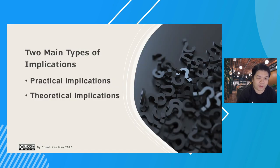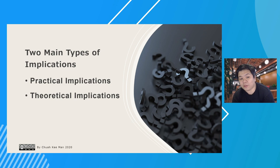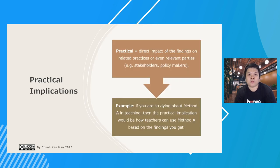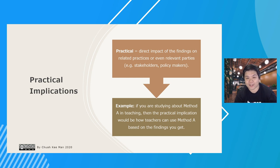There are two main types of implication. One is called practical implication and the other is theoretical implication. Some people also divide theoretical into a methodological implication, where you focus on the methodology used in your study, but that can also fall under theoretical implications. Practical implication means the direct impact of your findings on related practices or relevant parties like stakeholders, policy makers, teachers, or practitioners.